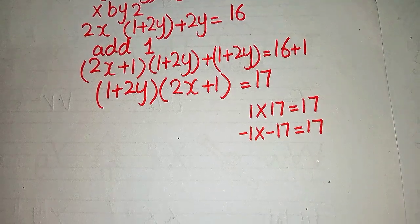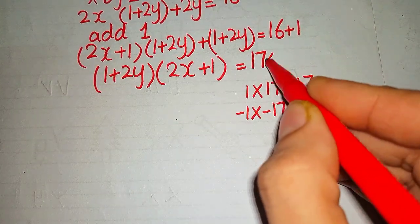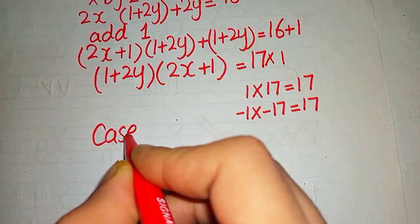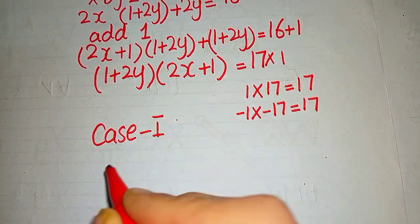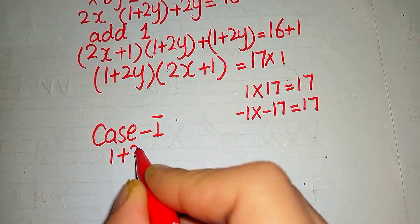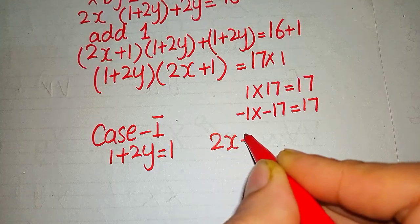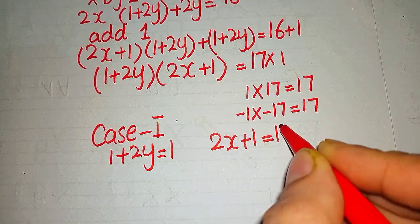First of all we take positive sides as Case 1: 1 + 2y = 1 and 2x + 1 = 17.